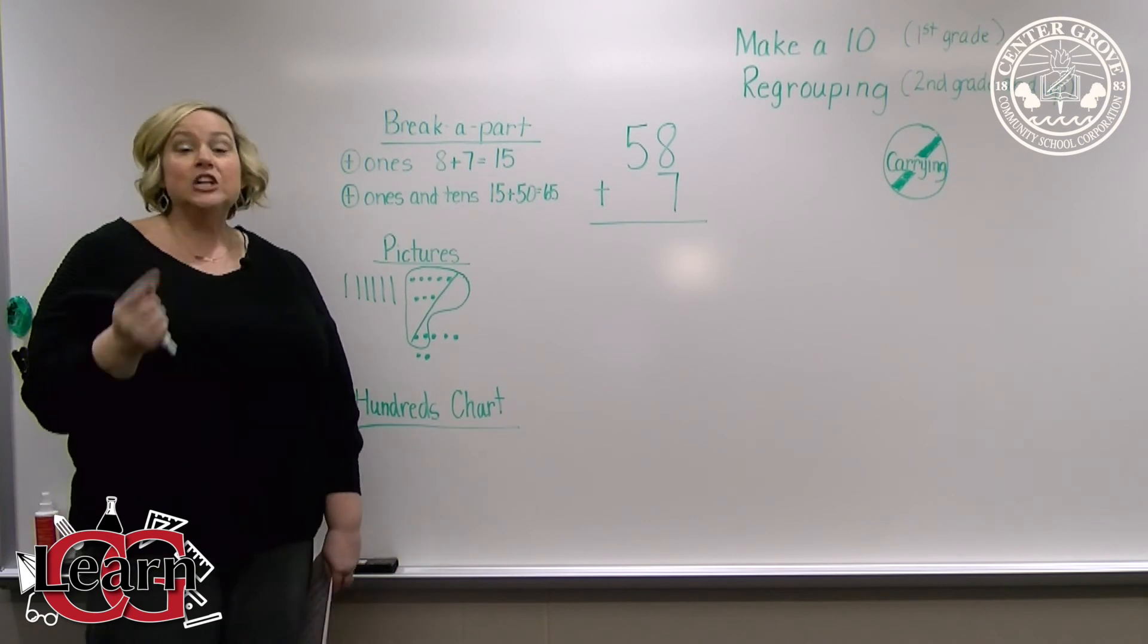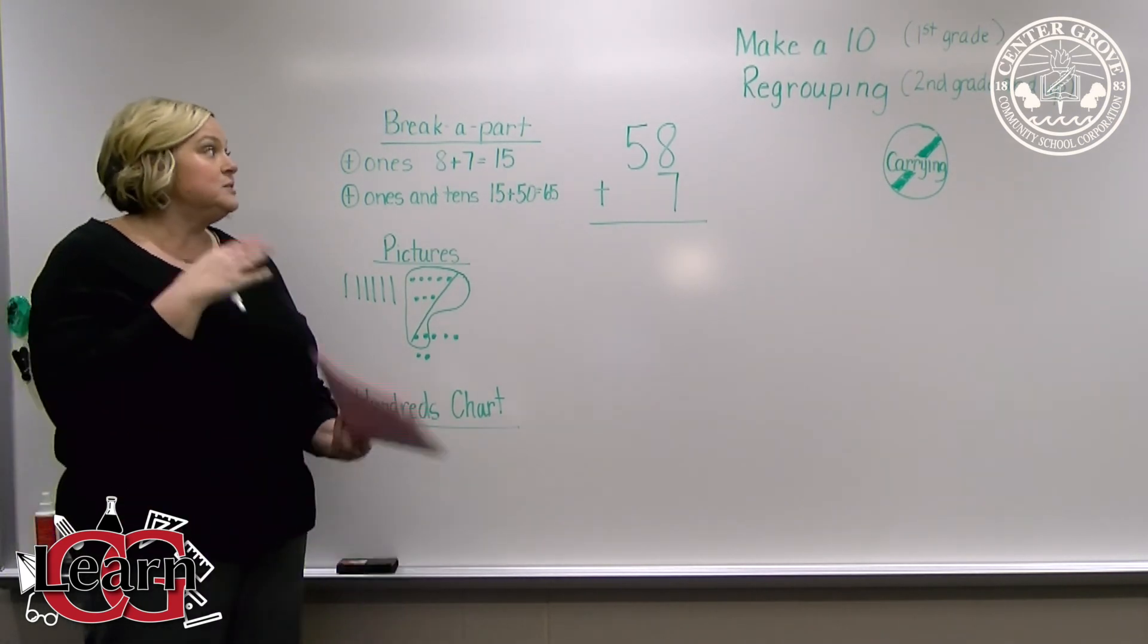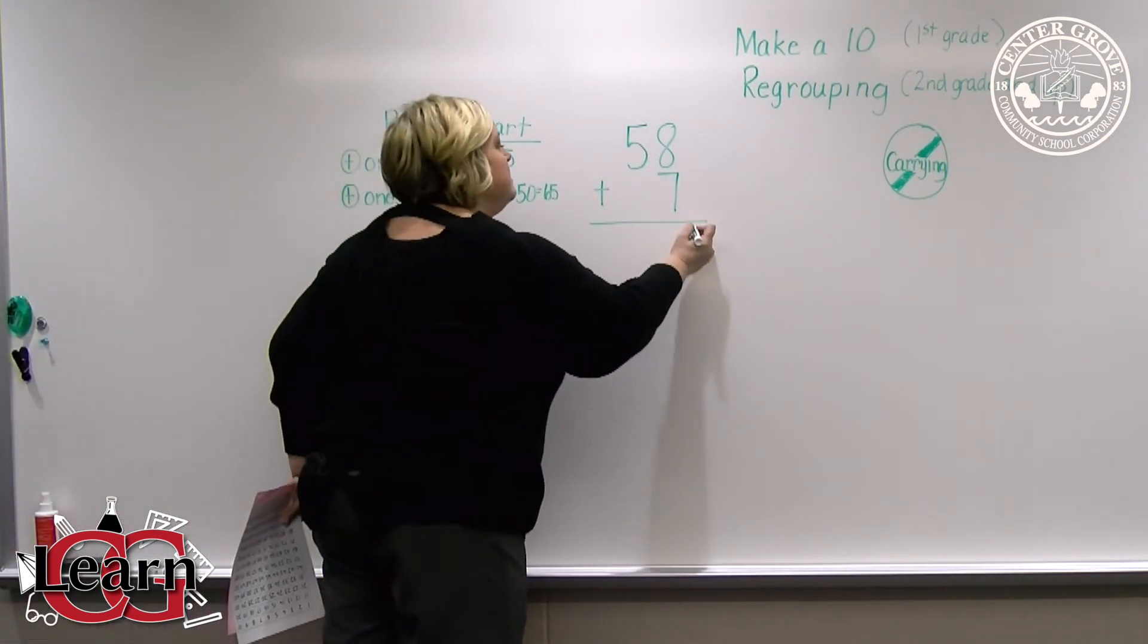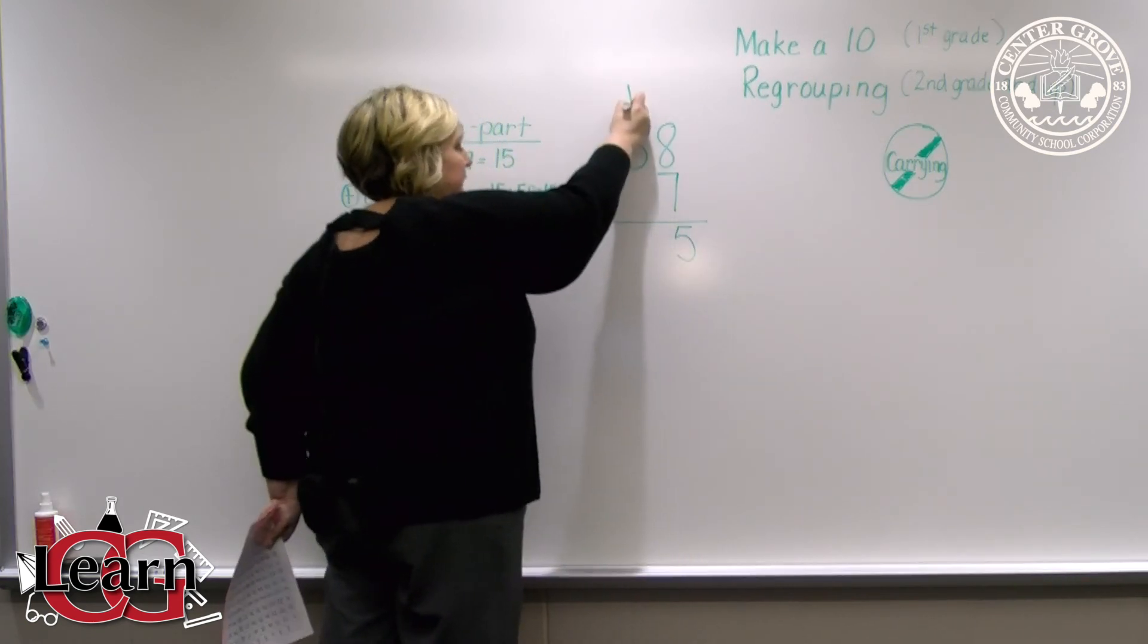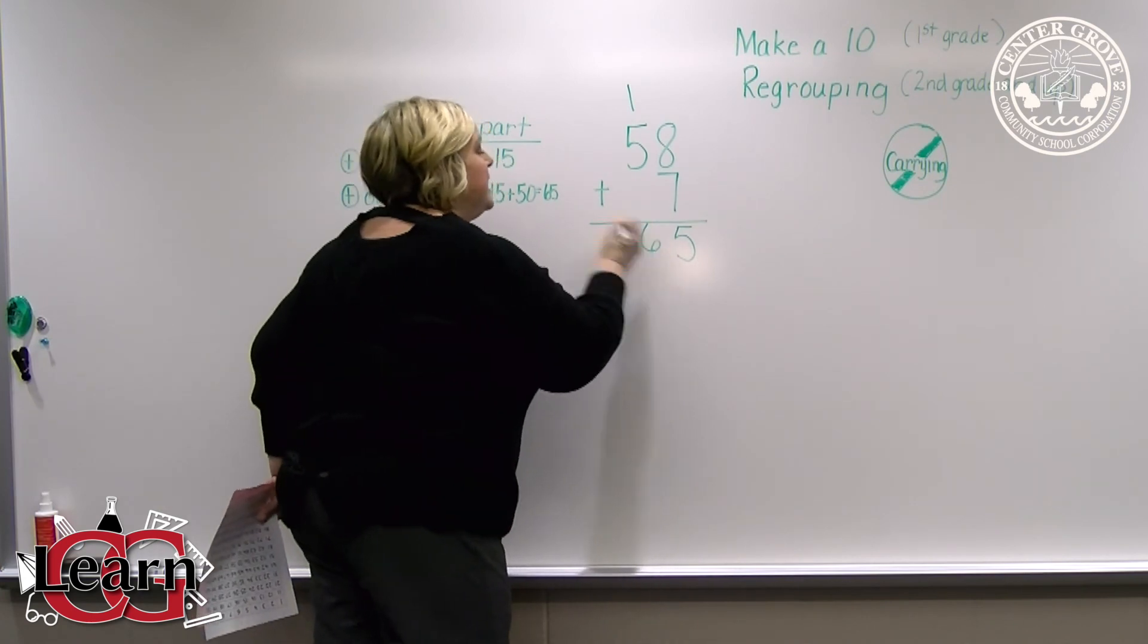In second grade, they will get into the standard algorithm, which is what I learned in school, where you take the eight plus seven which is 15. So, you put your one ten up here. One ten plus five tens is 65.